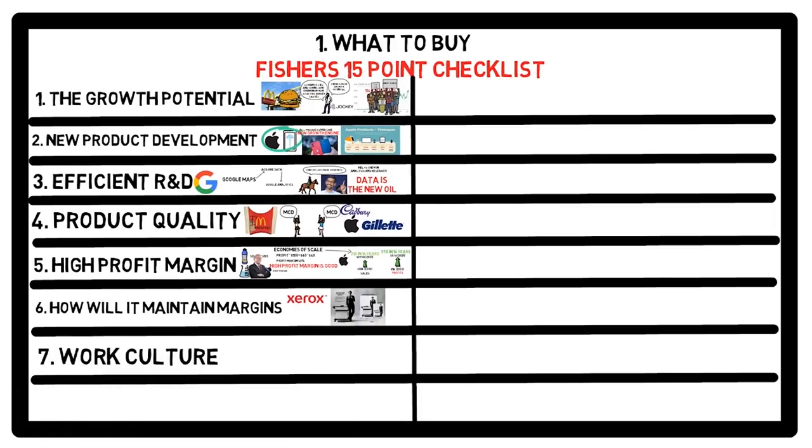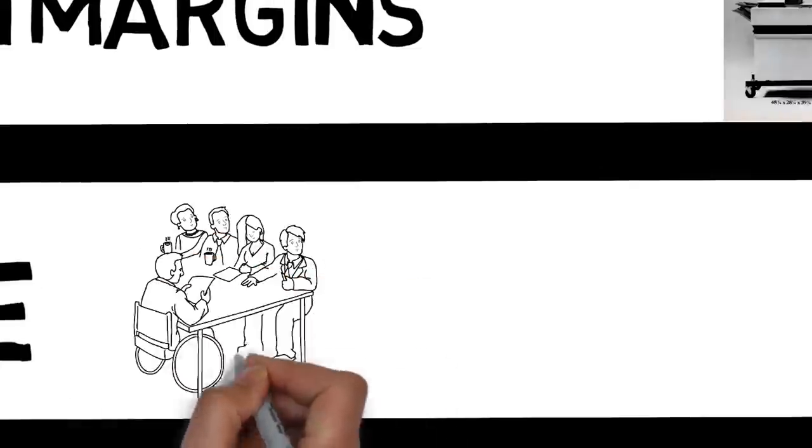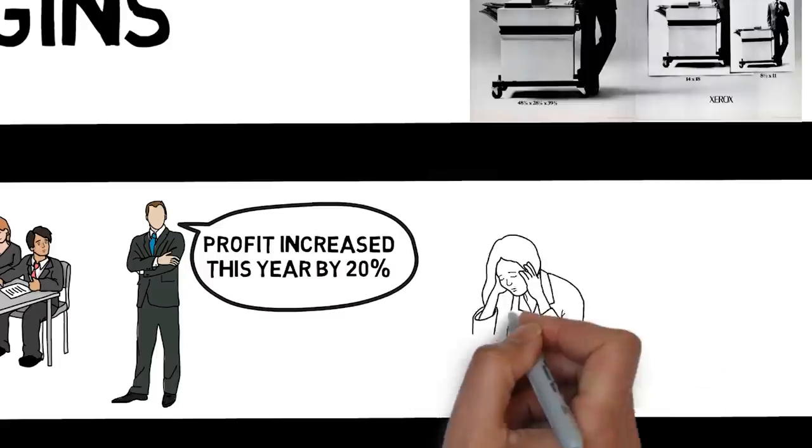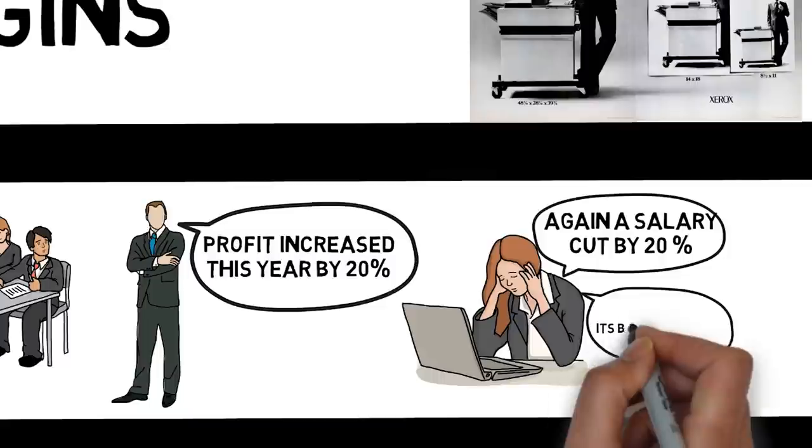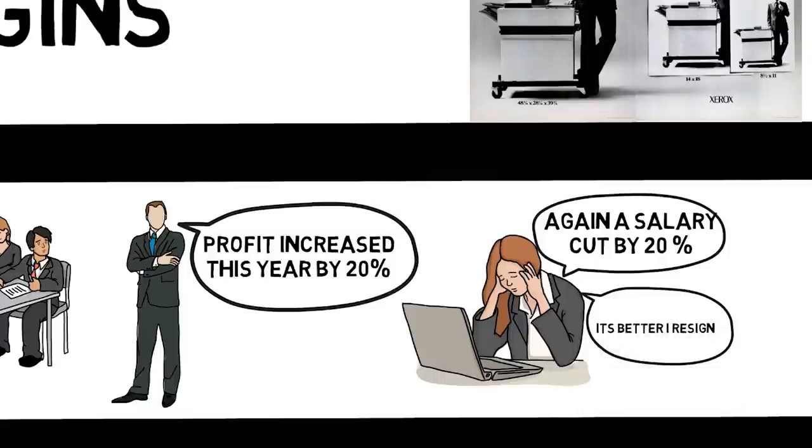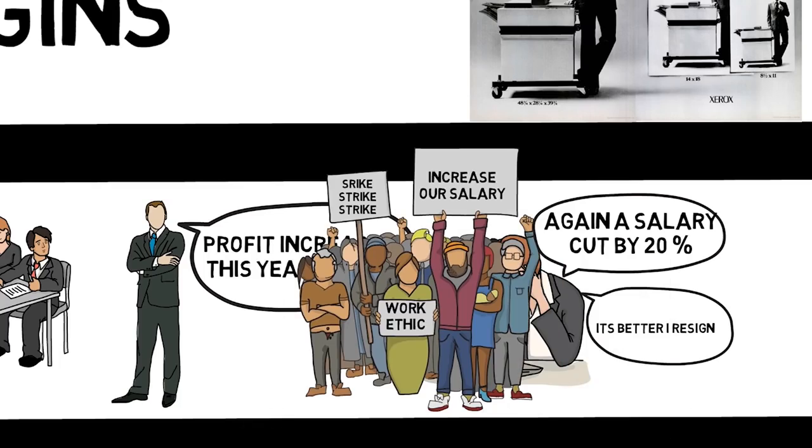Seventh, are the employees in the company happy? Employees are the backbone of a company. If the increase in profit that you are seeing is because of the salary cuts of the employees at lower levels, that is not an ideal situation. If employees are not happy to work in a particular company, that speaks badly of the future prospects of it. A company with employees going on strike against management again and again is an example of what you must stay away from.